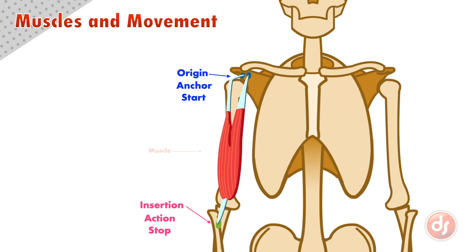Muscles usually connect to bones via a tendon, which can be short or very long. The muscle fibers will contract to create movement, but the tendons don't contract like the muscle fibers, so they act as strong cords that pull on the insertion points of the bone.